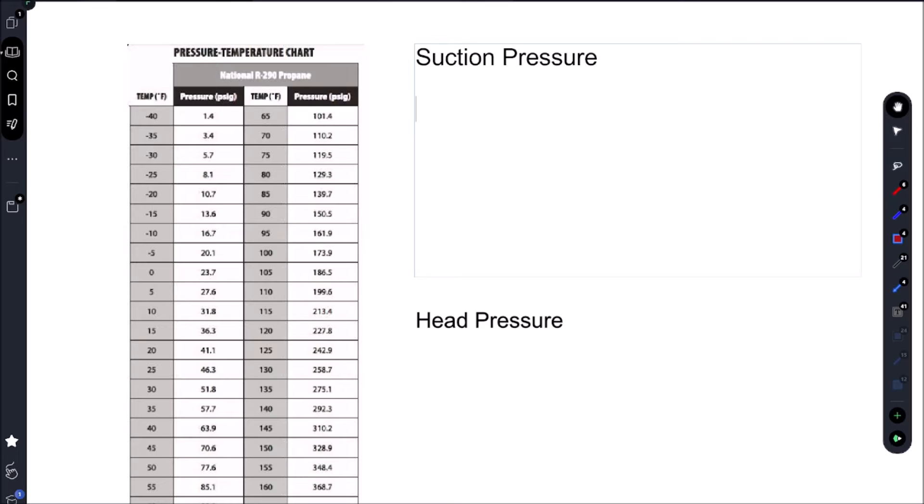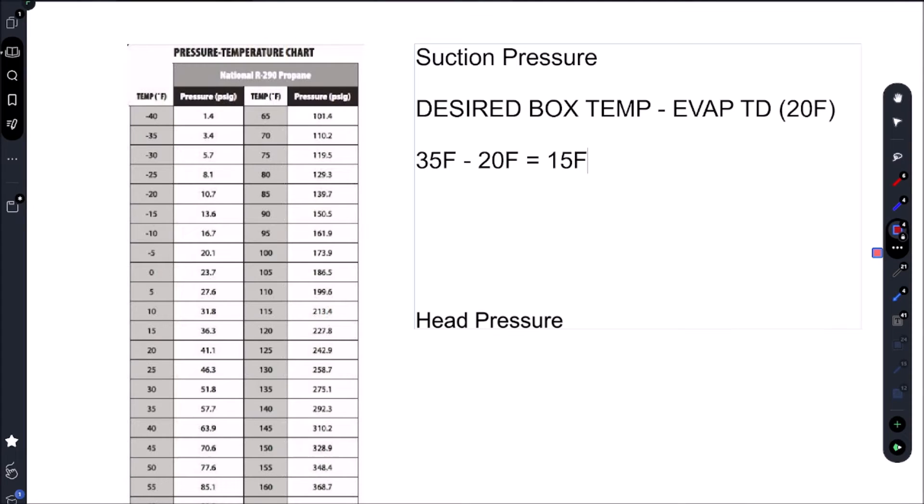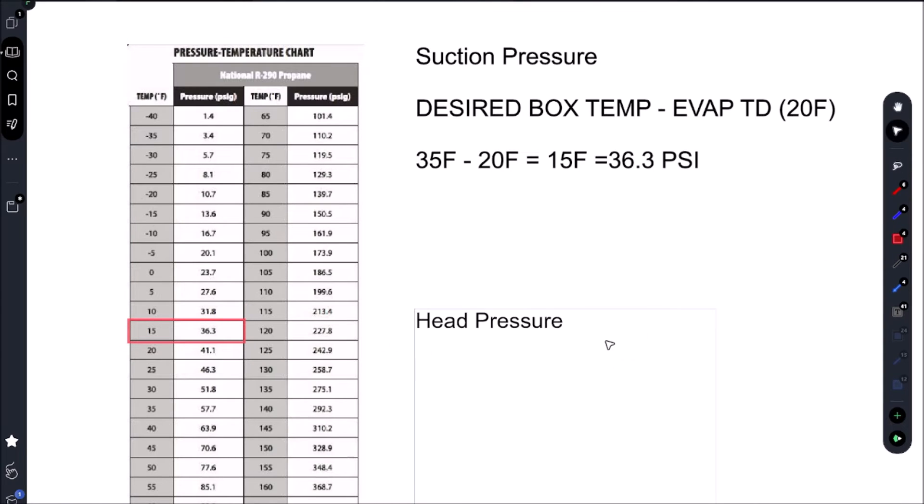Because we have a cap tube system, to figure out our suction pressure we're gonna take our desired box temp and subtract our evap TD. In this case that is 20 Fahrenheit, determined by the engineer from True Manufacturing. I'm looking for about 35 Fahrenheit, subtract 20 Fahrenheit, and that's going to give me 15 Fahrenheit. Everyone's always fixed on what the pressure should be but really it's all about saturation temperatures. 15 Fahrenheit is the temperature of the refrigerant inside the copper pipe.